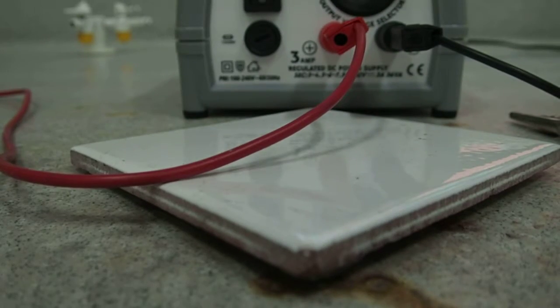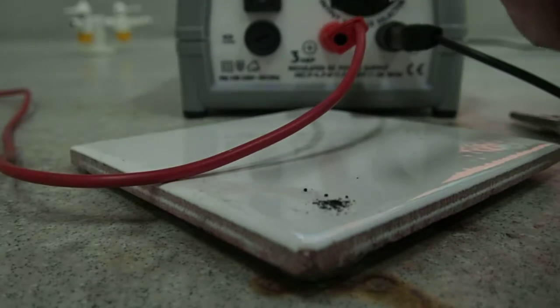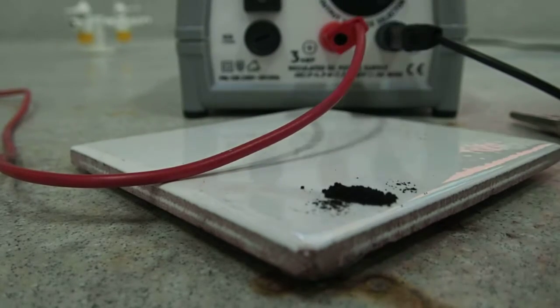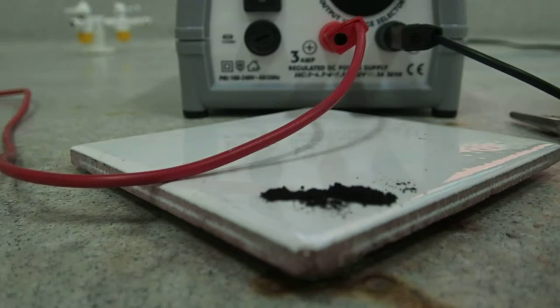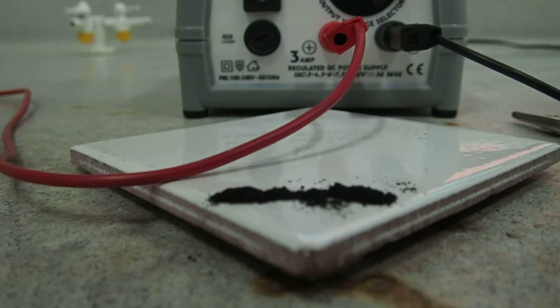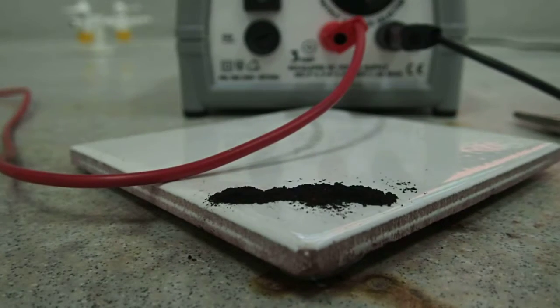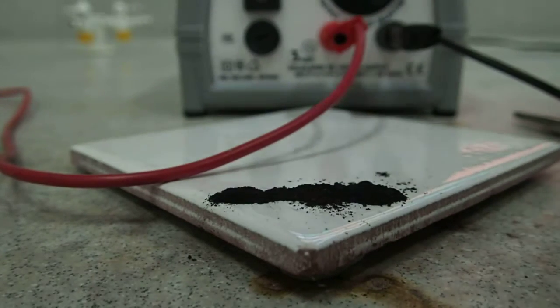This is the small scale or micro scale extraction of iron from iron oxide. The first thing that we need to do is put a little bit of our pre-prepared mixture of iron oxide and carbon along the edge of the tile here in a nice little line.